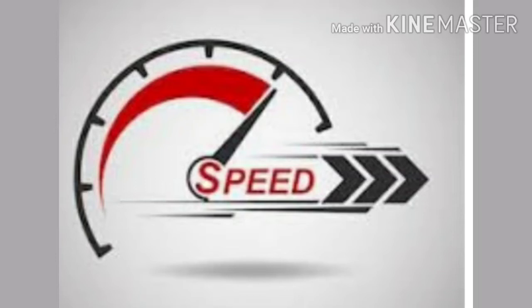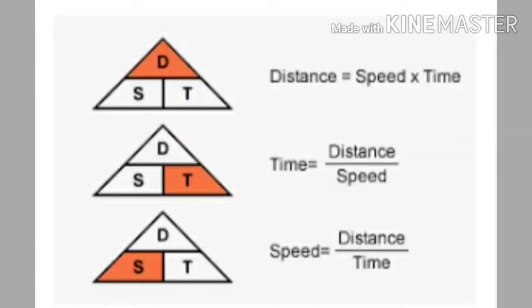The idea about the motion of a body — that is, how fast or slow it is moving — is obtained by a quantity known as speed. The distance covered by a body in unit time is called the speed of the body.